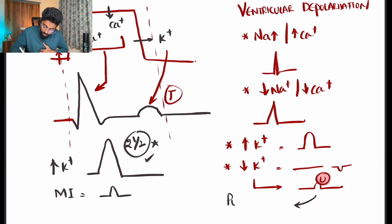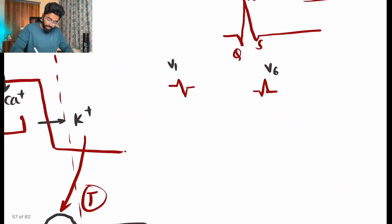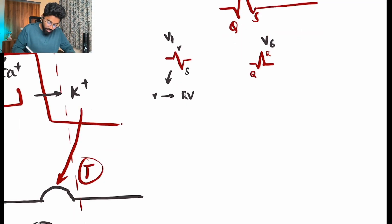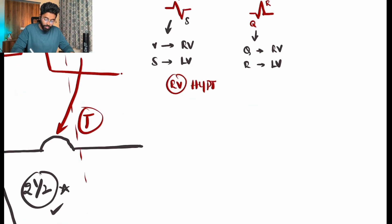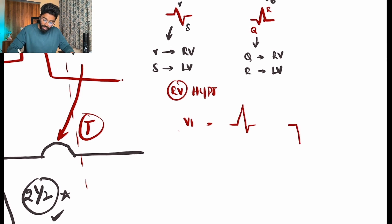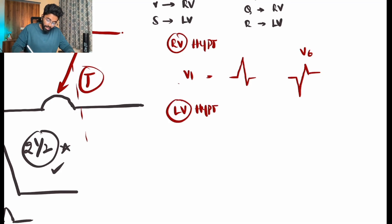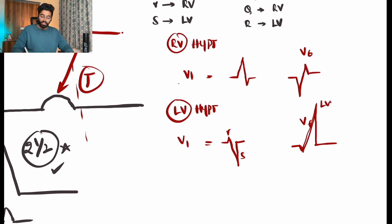The T wave represents ventricular repolarization; the U wave represents Purkinje fiber repolarization. In V1, there is a small R representing the right ventricle and an S representing the left ventricle. In V6, there is a Q representing the right ventricle and an R representing the left ventricle. In right ventricular hypertrophy, V1 shows a tall R wave relative to S, and V6 shows a deep Q relative to R. In left ventricular hypertrophy, V1 shows a taller S than R, and V6 shows a tall R wave.